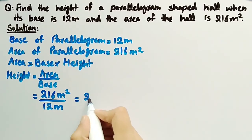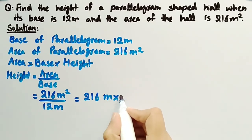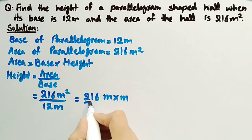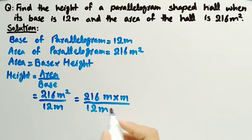216 square meters can be written as meter multiplied by meter divided by 12 meters. This meter will be cancelled out by this one.